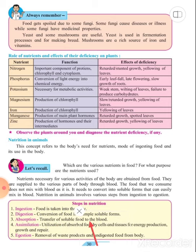Absorption is the third step. Absorption is the transfer of soluble food to the blood. Assimilation is the fourth step - utilization of absorbed food by cells and tissues for energy production, growth and repair.